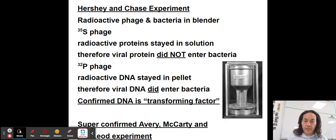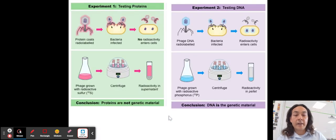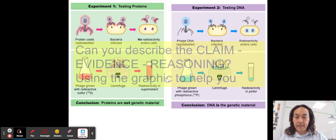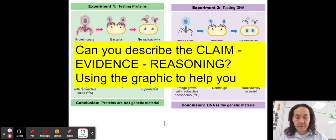Up next is the blender experiment, Hershey and Chase. They just really brilliantly use radioactivity to kind of decide or to confirm that DNA is a transforming factor from Avery McCarty and McLeod's experiment. So I would give you a picture like this. I'd probably cut off the bottom, right? And so here you had these viruses, and these are viruses that infect E. coli. And we're going to label them radioactively for sulfur and for phosphorus. So looking at these pictures now, pause the video and can you make your own claim evidence reasoning on this?